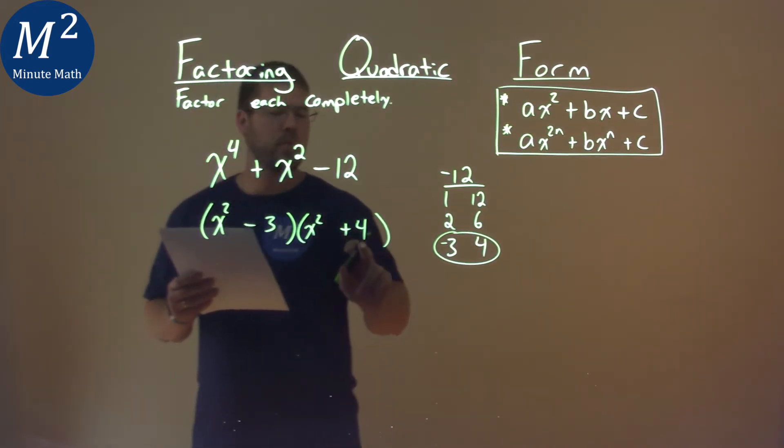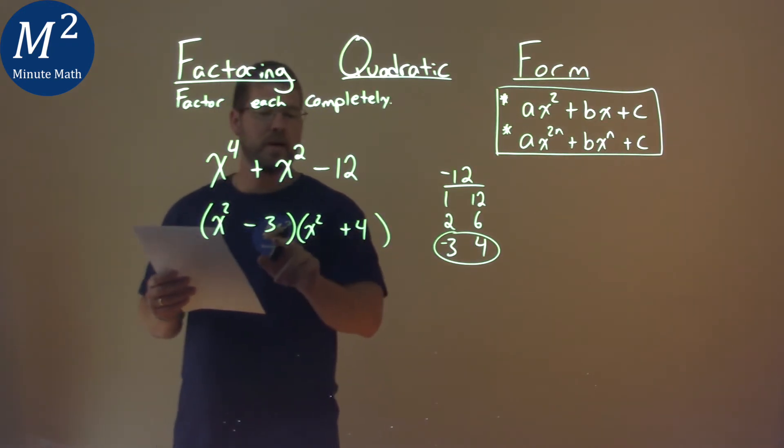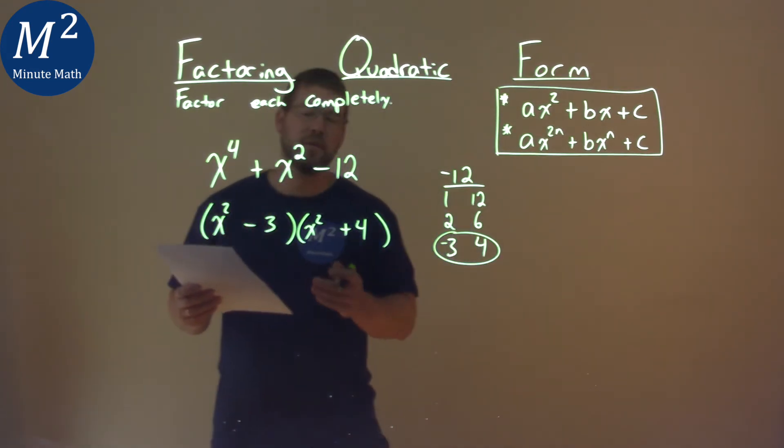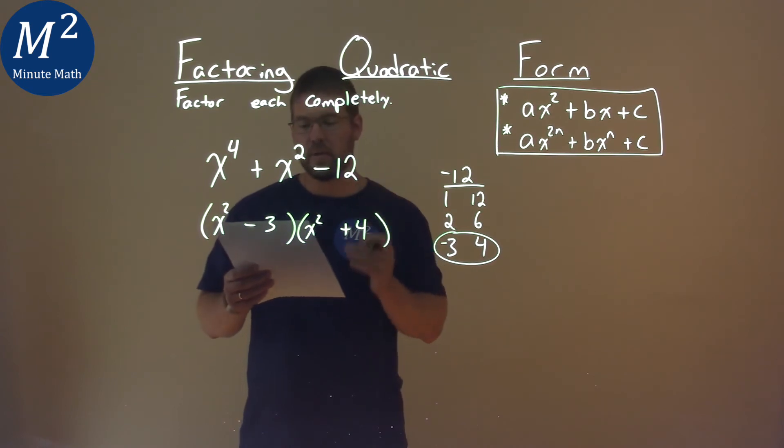Minus 3 times 4 would be a negative 12. But when we add them, when they multiply to each x squared, respectively, we get a positive 1 x squared. And so our final answer here is x squared minus 3 times x squared plus 4.